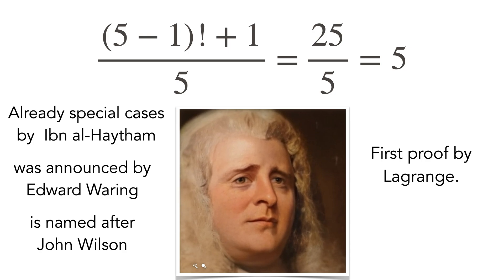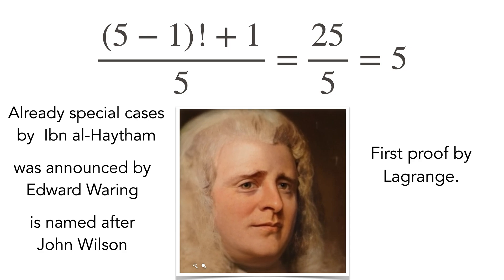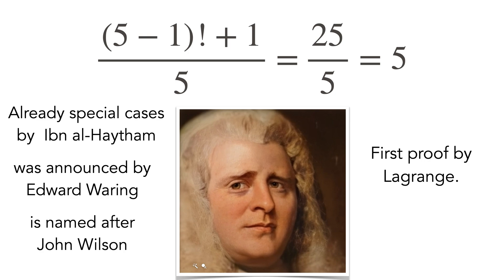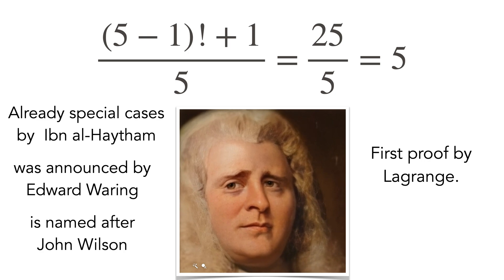It has been anticipated by Ibn al-Haytham, was announced by Waring and named after Wilson. It is named after John Wilson whom we see here. The first proof was given by Lagrange.